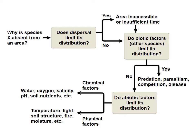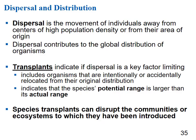Some plants need fire to stratify their seeds in order for those seeds to germinate. Dispersal is the movement of individuals away from centers of high population density or from their area of origin, and it contributes to global distribution of organisms. Transplants — organisms intentionally or accidentally relocated to a new area — indicate that a species' potential range is larger than its actual range, but species transplants can disrupt communities or ecosystems, so we generally try to avoid them.